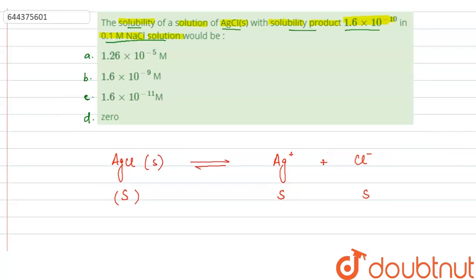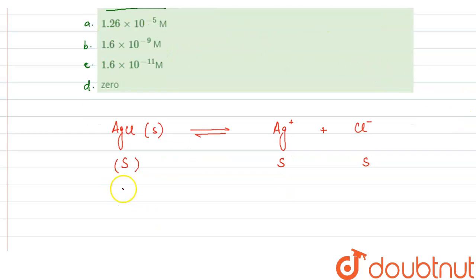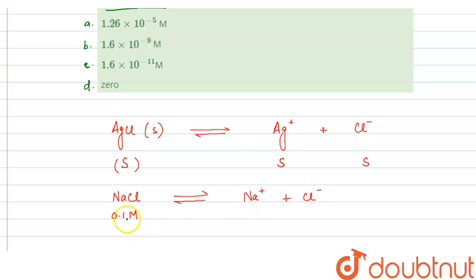Now here we have AgCl in NaCl solution that is 0.1 molar. When NaCl dissociates, it forms Na⁺ and Cl⁻. From 0.1 molar NaCl, we get 0.1 molar Na⁺ and 0.1 molar Cl⁻ ion.